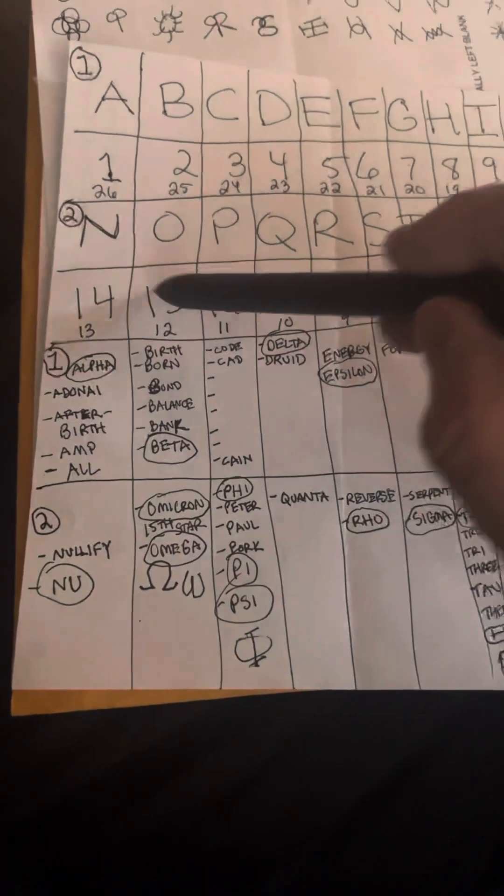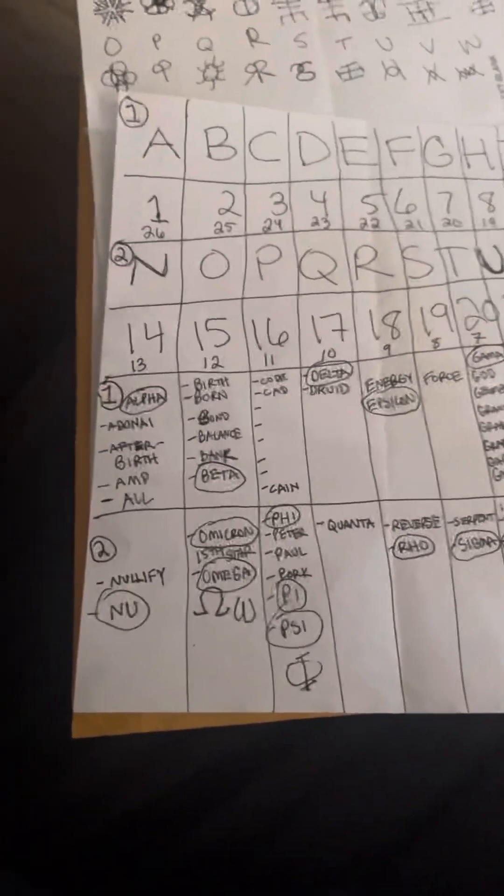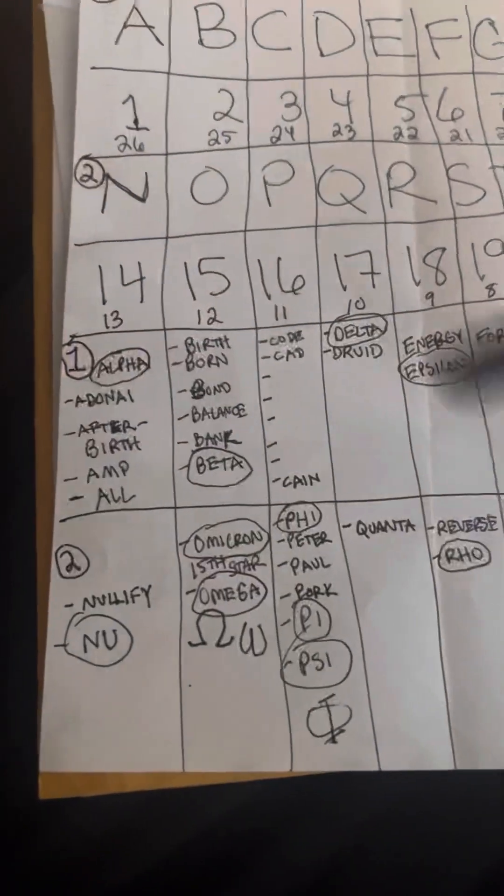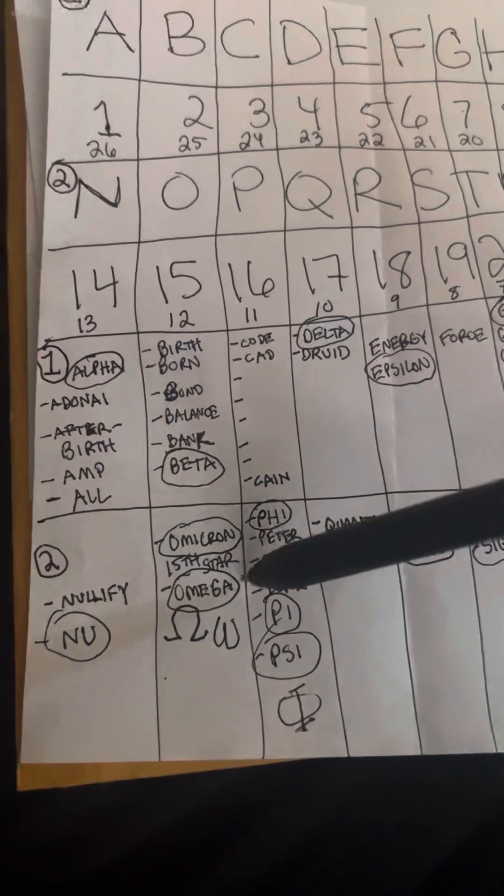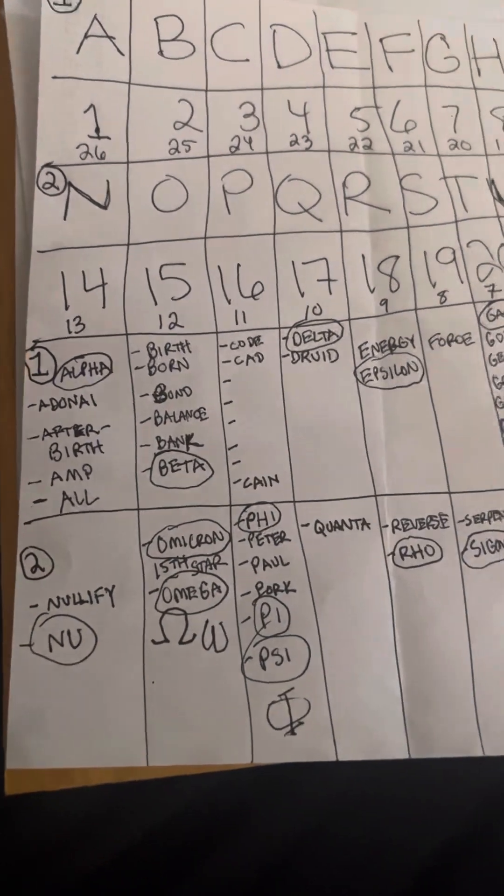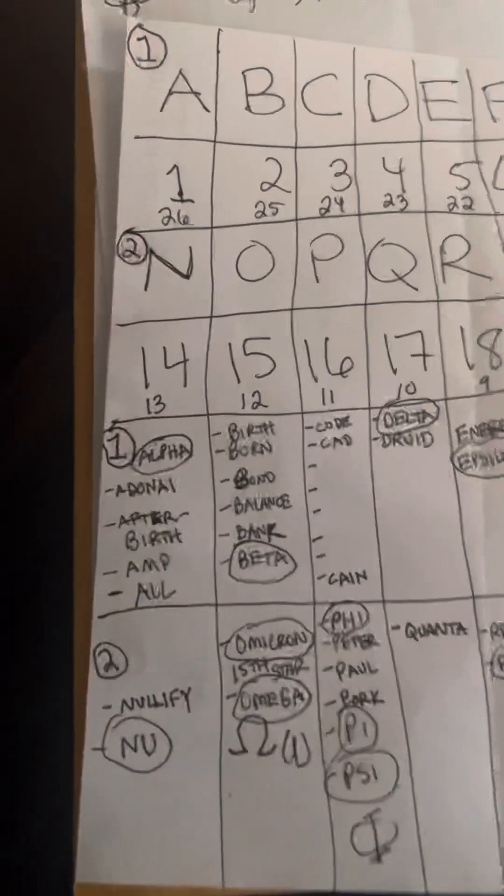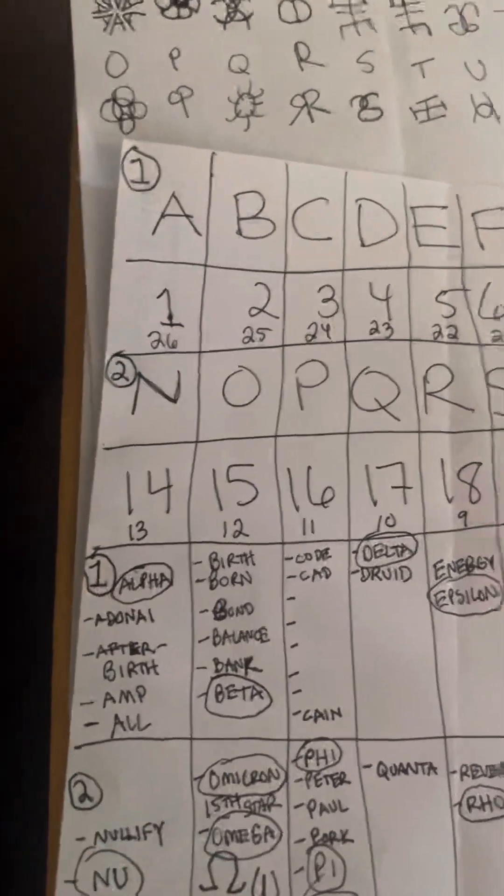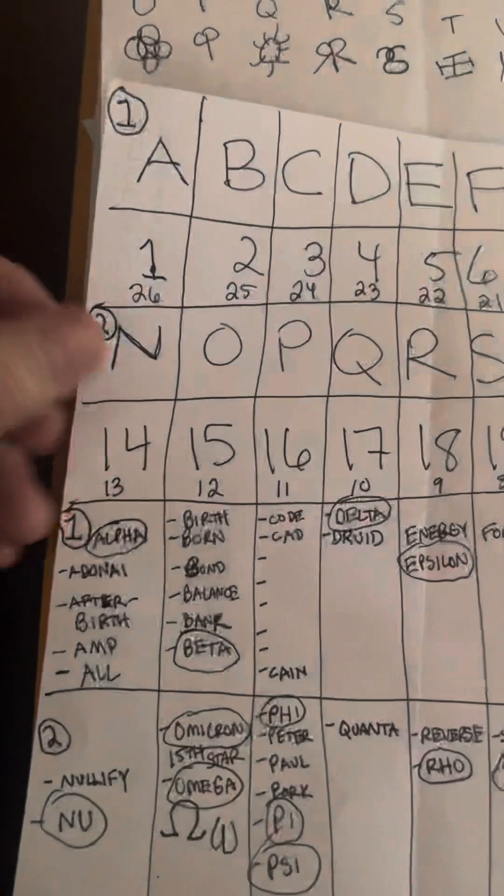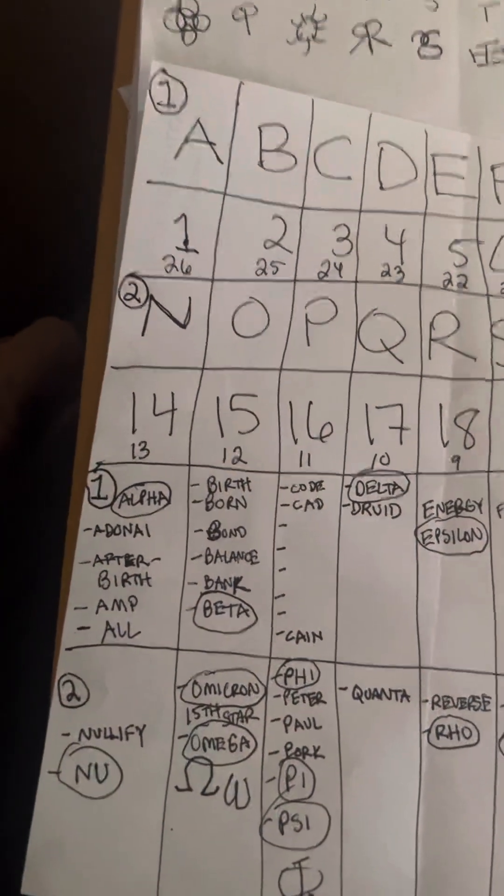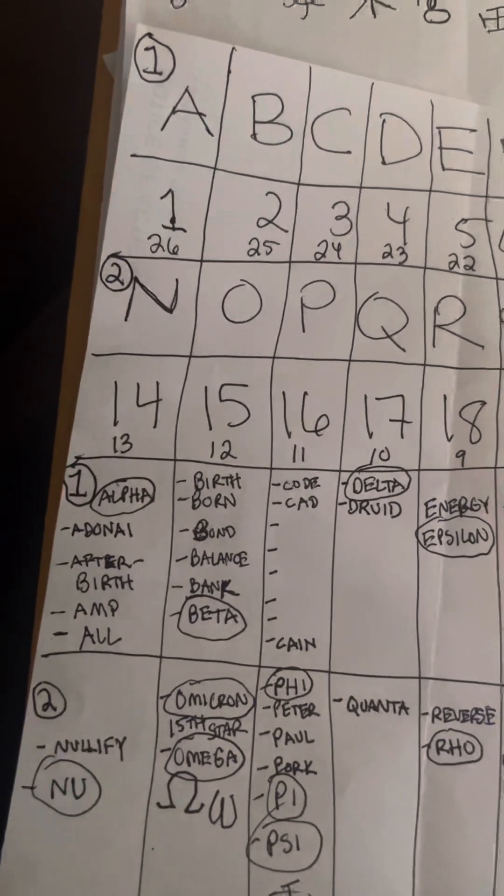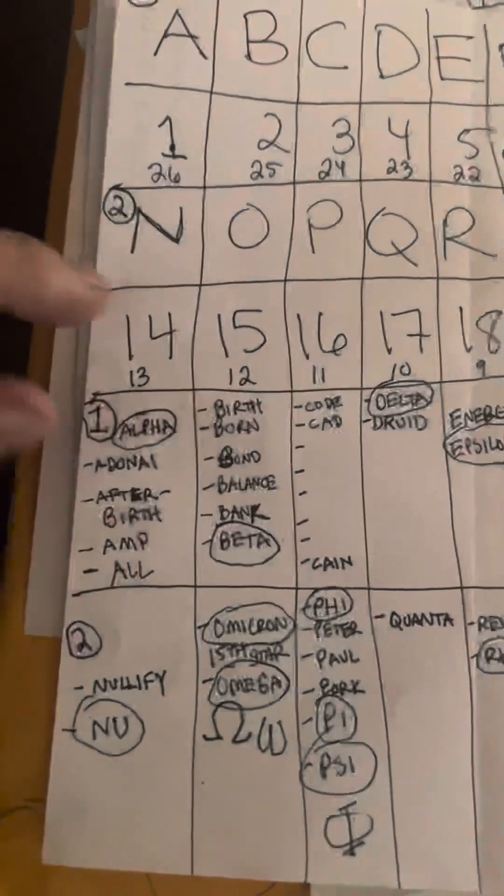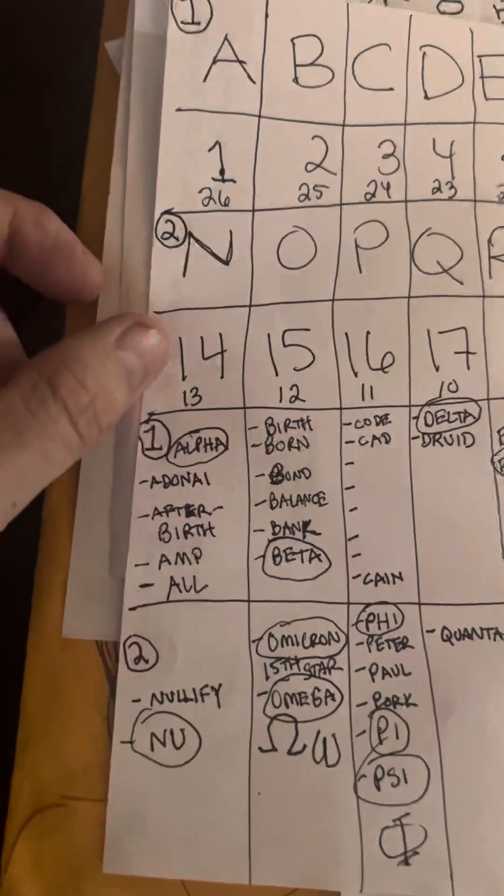But when you get into this territory and you come to the 13th, there's a space or a span here between the N and the O where you have this O for the omega, omicron. The mothering structure, the quantification, the beginning, sort of like the beginning and the end. N being more new, nullify, N-U in the Greek, and how groups of letters seem to interplay with a sort of energy themselves.